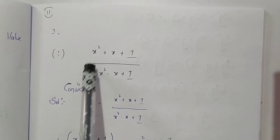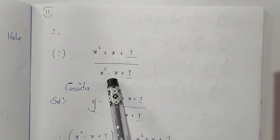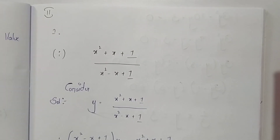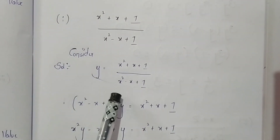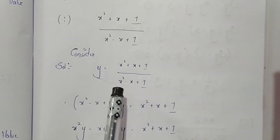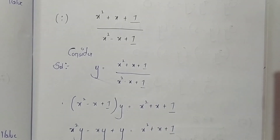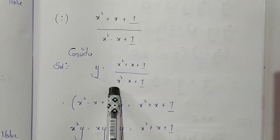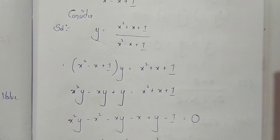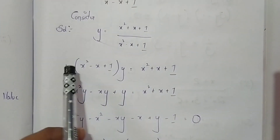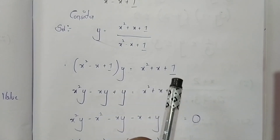The first expression is (x² + x + 1) divided by (x² - x + 1). We consider that y is equal to this expression, that is (x² + x + 1) divided by (x² - x + 1). Now send the denominator to the left hand side: (x² - x + 1) multiplied by y equals (x² + x + 1).